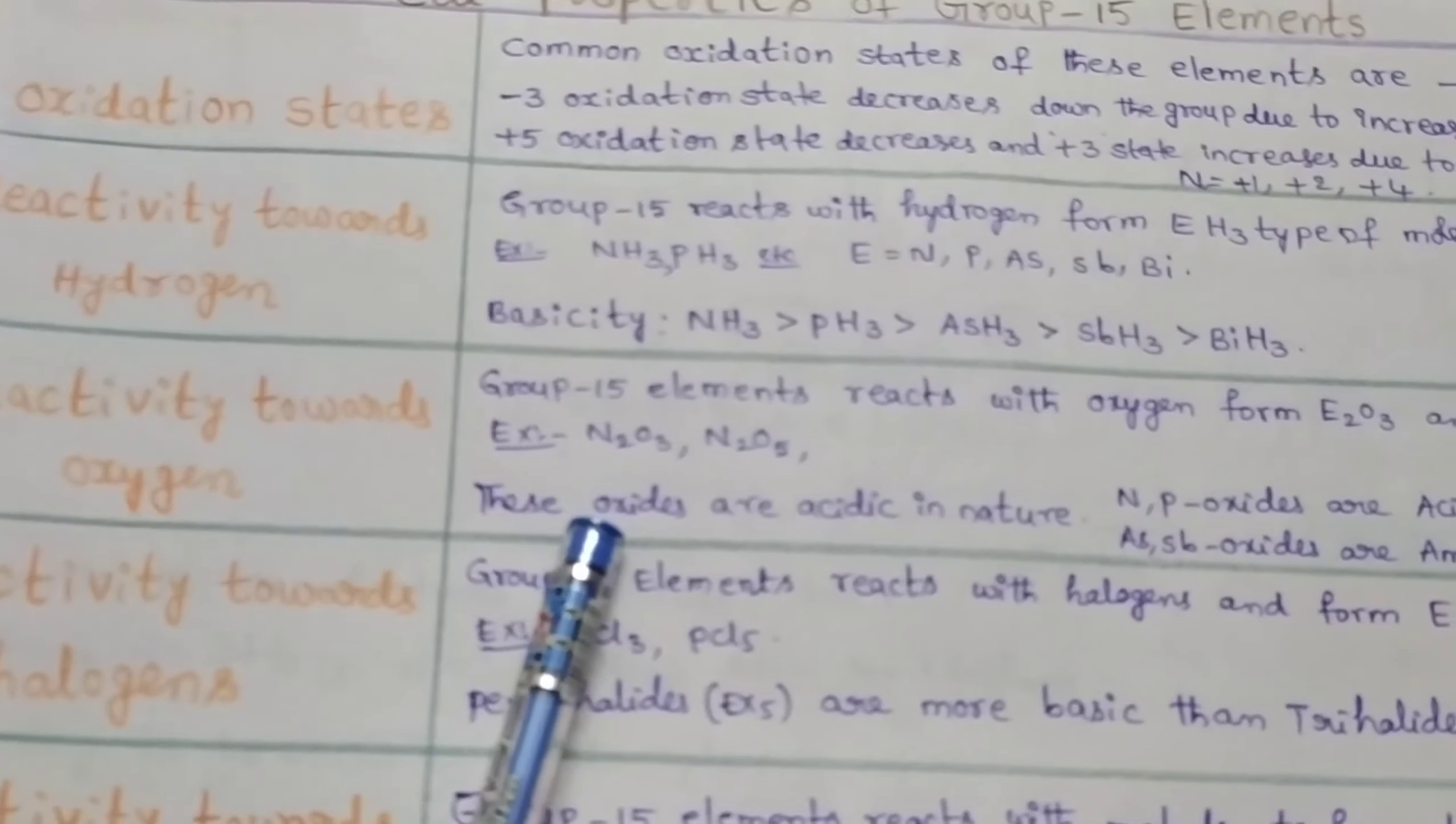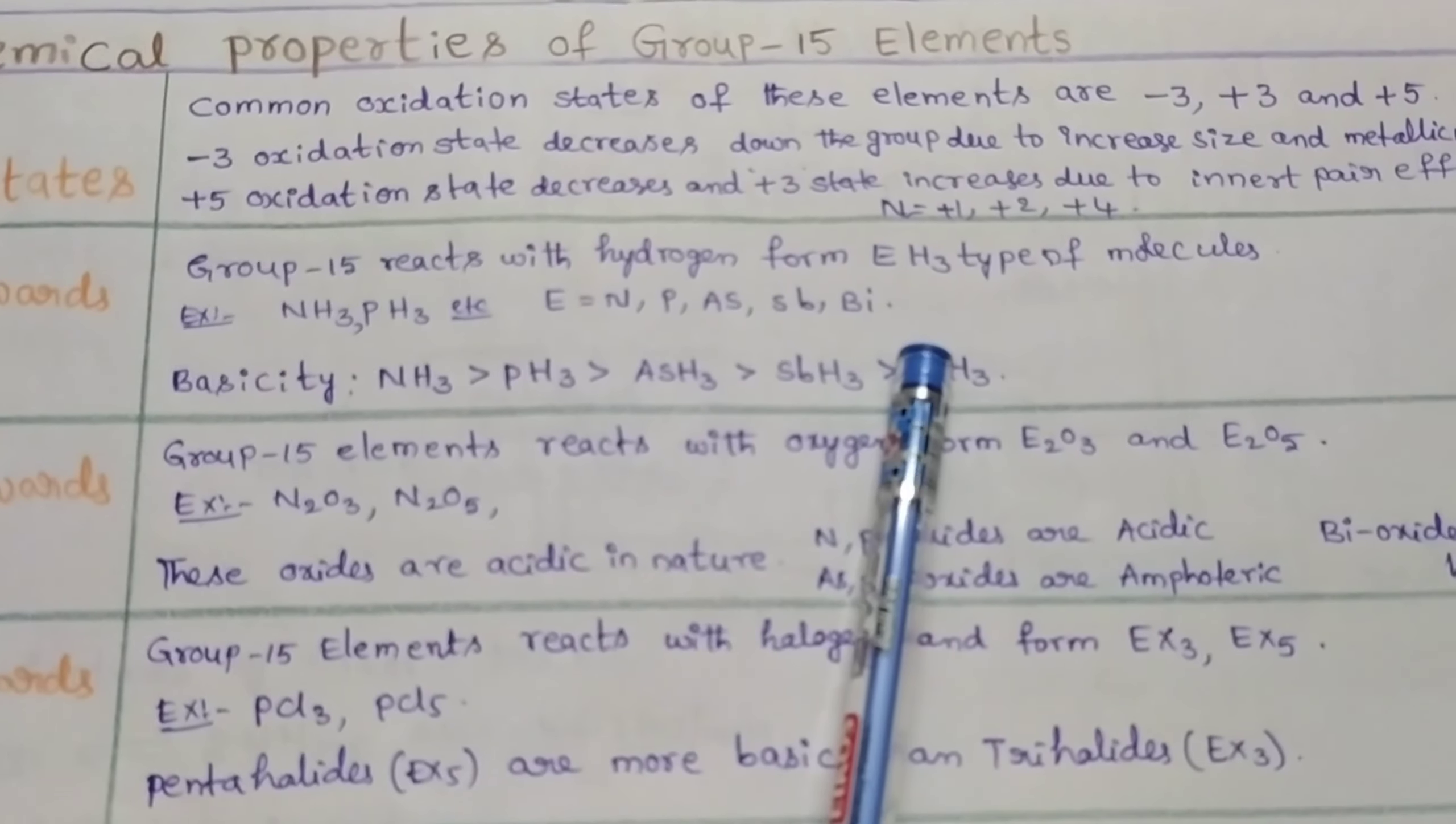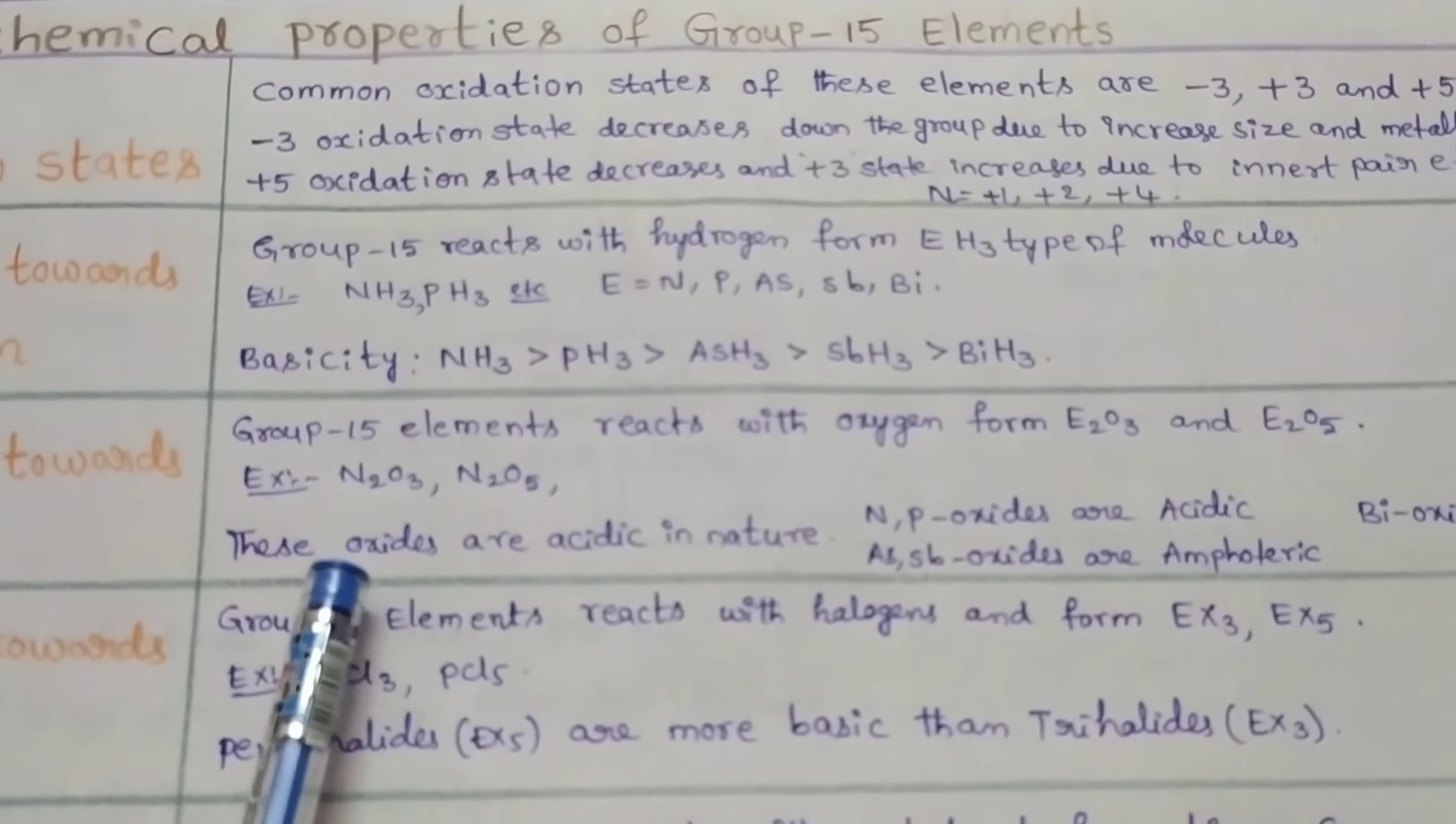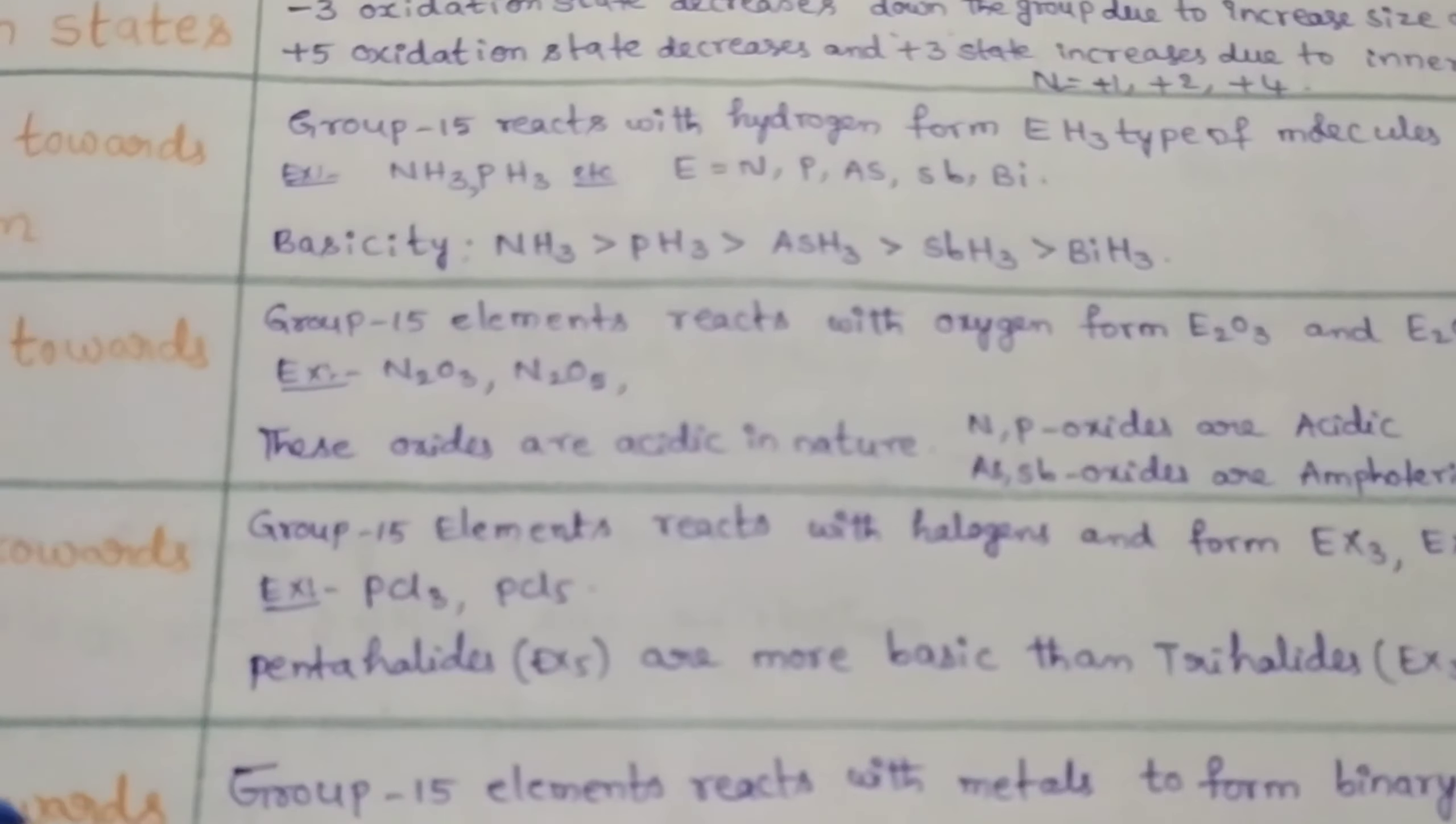Now, reactivity towards oxygen. Group 15 elements react with oxygen to form E₂O₃ and E₂O₅ molecules. Here E stands for nitrogen, phosphorus, arsenic, antimony, and bismuth. Examples are N₂O₃ and N₂O₅. These are the compounds when nitrogen is reacted with oxygen. These oxides are generally acidic in nature. For example, nitrogen and phosphorus oxides are acidic in nature. Arsenic and antimony oxides are amphoteric in nature. Bismuth oxides are basic in nature.